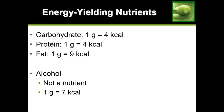We said that the nutrients that provide us with calories are the carbohydrates, proteins, and lipids. Now we want to look at the differences in the amount of calories that each nutrient provides. One thing to mention is that alcohol is listed as providing calories even though it's not one of the energy-yielding nutrients — because technically alcohol is classified as a toxin, not a nutrient.